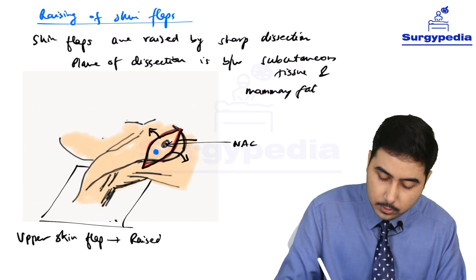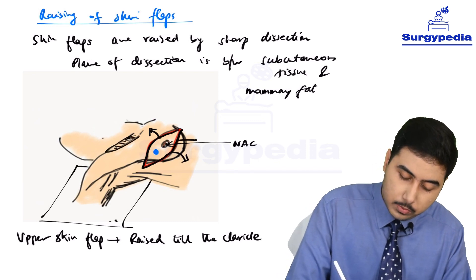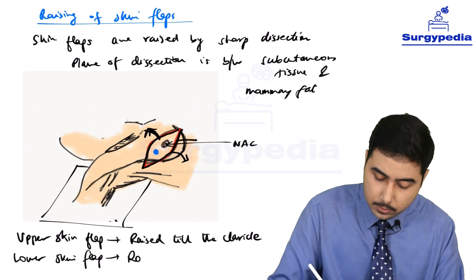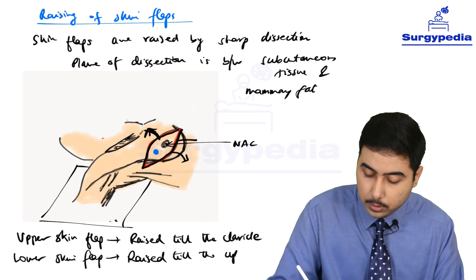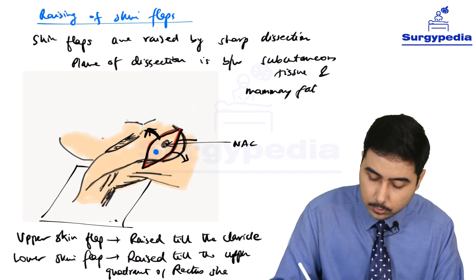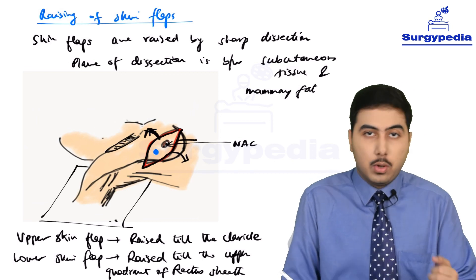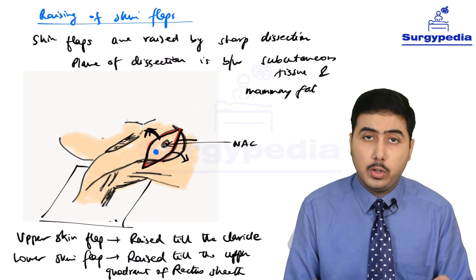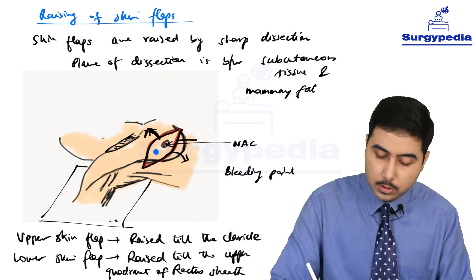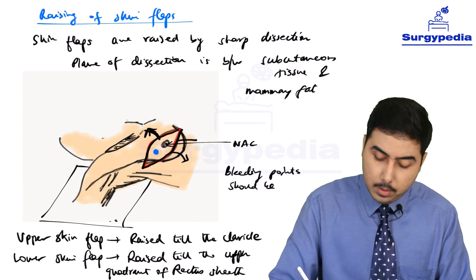The upper skin flap is raised till the clavicle, and the lower skin flap is raised till the upper quadrant of the rectus sheath. Naturally there are going to be bleeding points because we are carrying out sharp dissection, so the bleeding points should be taken care of — they should be cauterized using the diathermy pencil.